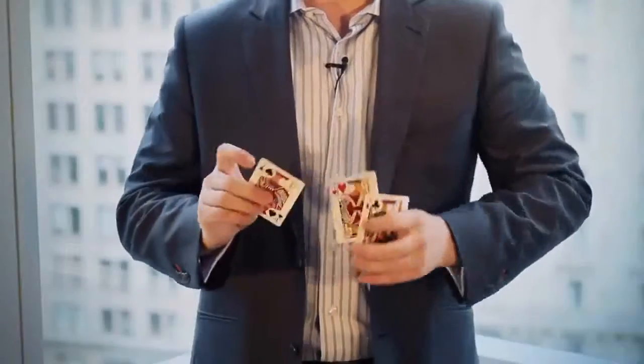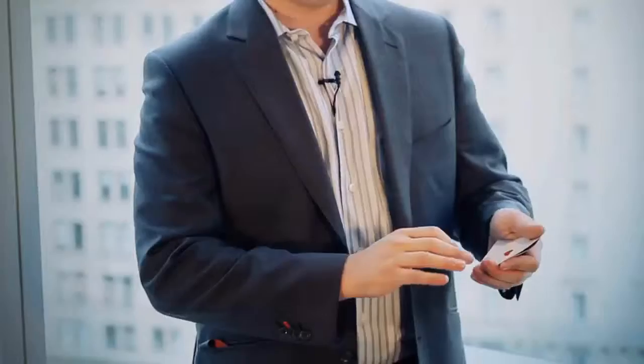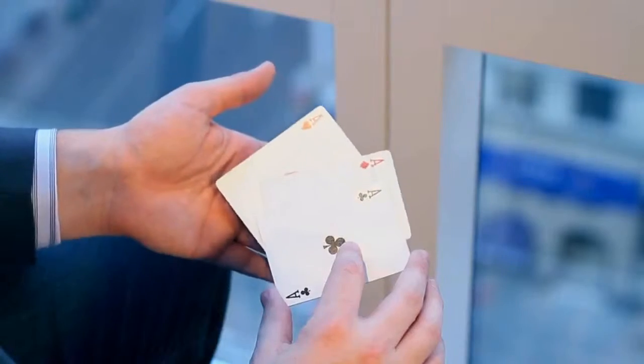Hey, this is Michael Feldman here in New York. I'm here to share with you a travelers or interchange style routine where the jacks start separated in four different pockets and one by one they change places with the aces, and it's got a surprise ending that I think you'll really like. We're actually going to take you step by step through the whole routine and show you how to do it.